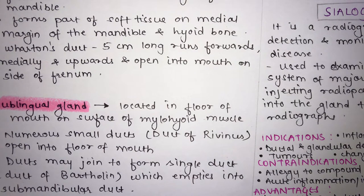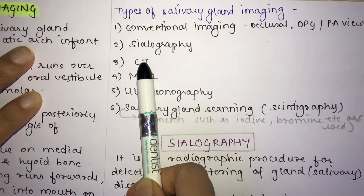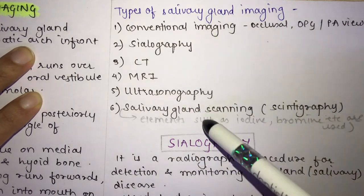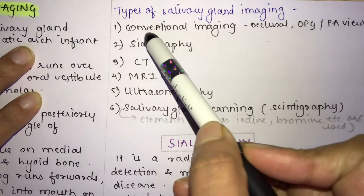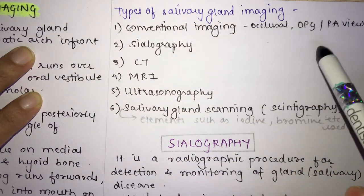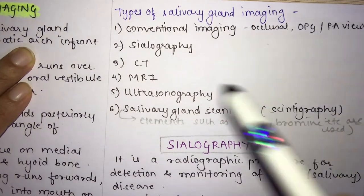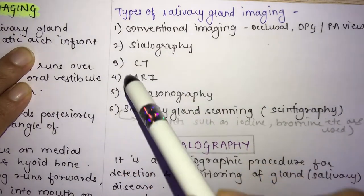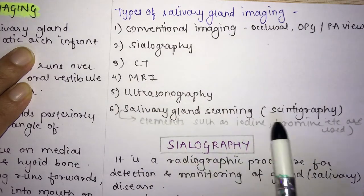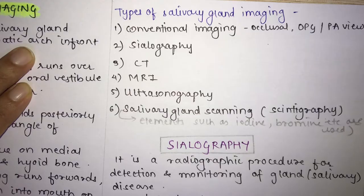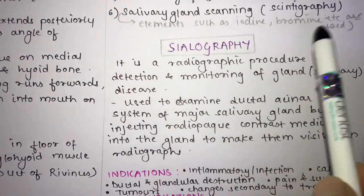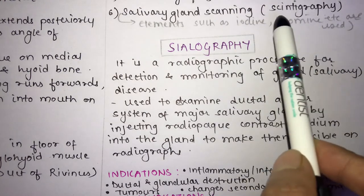Moving on to the types of salivary gland imaging. For salivary gland disease, the following imaging procedures can be used: conventional imaging including occlusal, OPG (panoramic), or PA view; sialography; CT scan; MRI; ultrasonography; and salivary gland scanning known as scintigraphy, which uses elements such as iodine and bromine.